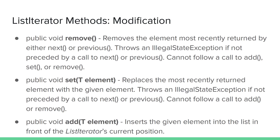Likewise, the set method affects the most recently returned element, and would throw an IllegalStateException if not preceded by a next or previous call. Set cannot follow a call to add or remove. The add method will always work — it inserts the given element into the list in front of the ListIterator's current position, so the element that would be returned next remains unchanged after a call to add. A call to previous would return the newly added element.